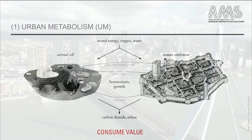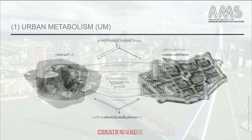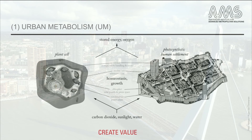The concept of urban metabolism looks at a human settlement according to the analogy of animal and plant cells. The animal cell has a so-called consume value based on the process of homeostasis and growth, with use of stored energy, oxygen and water, and production of carbon dioxide and refuse. While the plant cells, to some extent, turn this around. In this way they have a create value, where they create oxygen and store energy, taking carbon dioxide, sunlight and water as input.